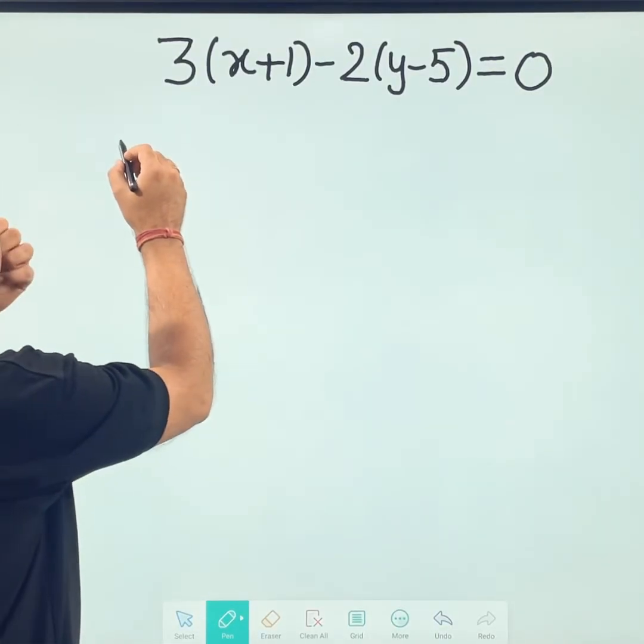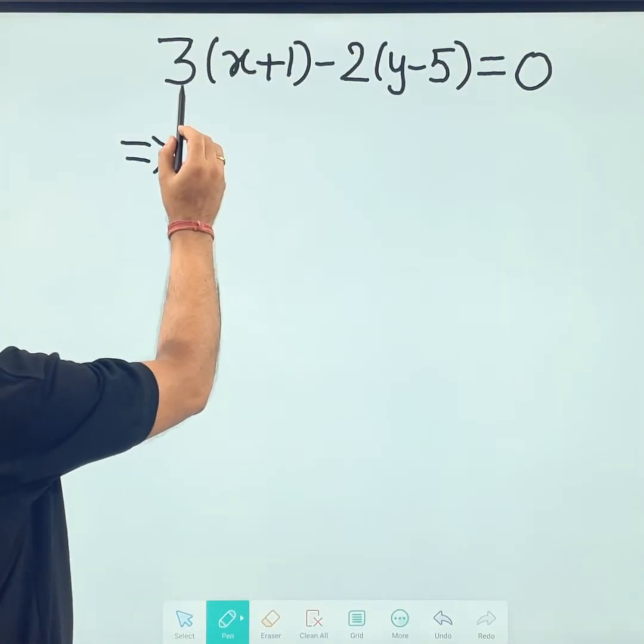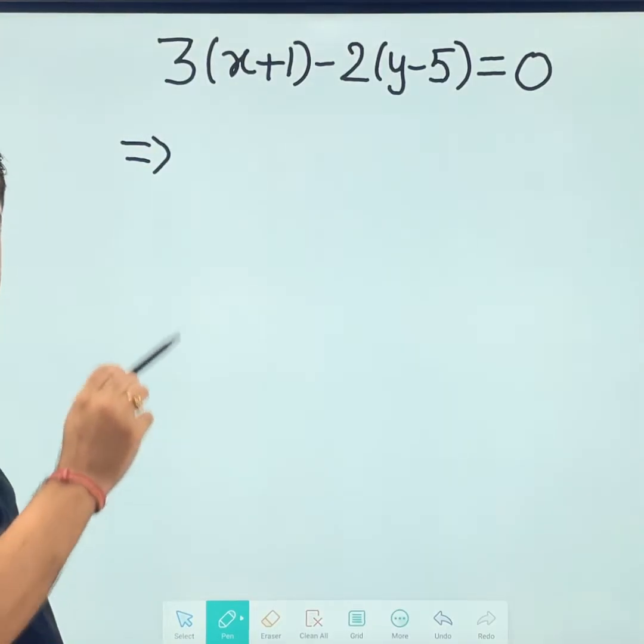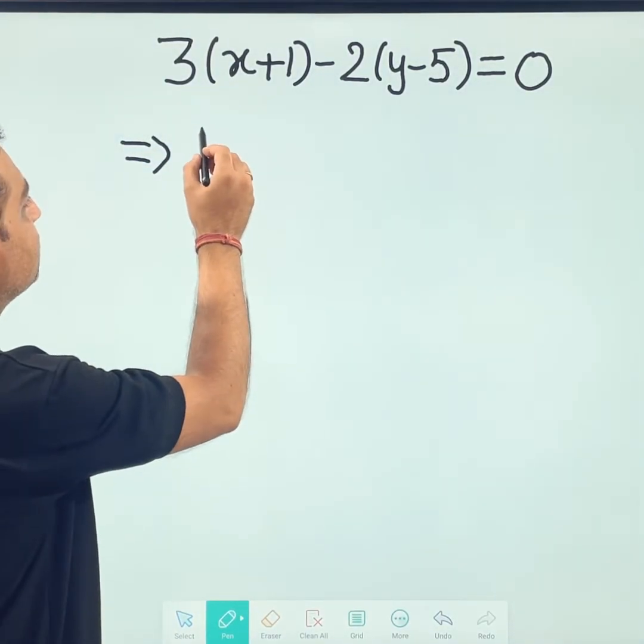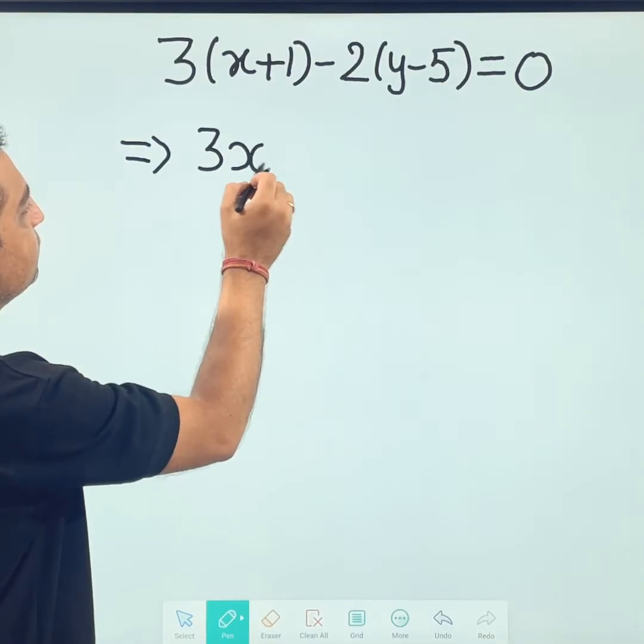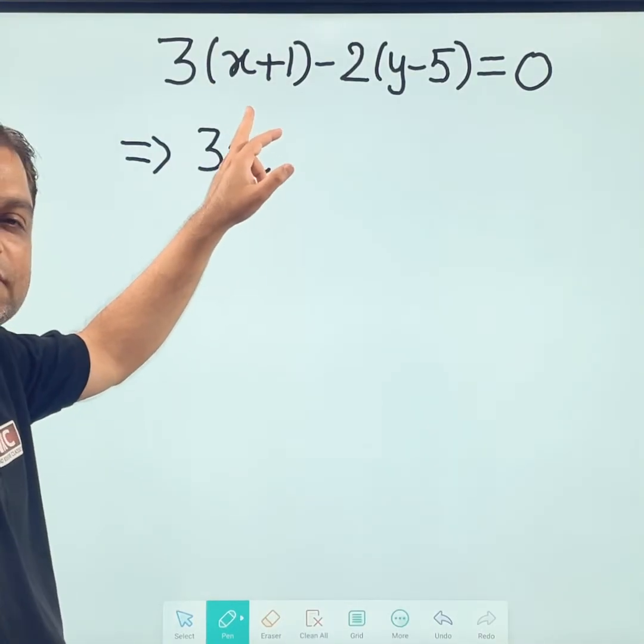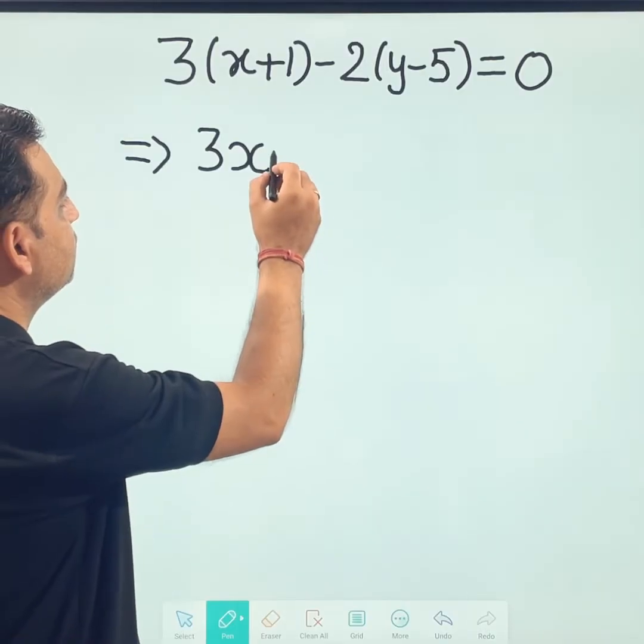What we will do, this 3 will be multiplied with x. First value 3 multiplied with x will make it 3x. Then 3 will be multiplied with the next value 1. 3 ones are 3.